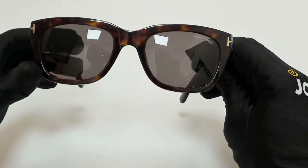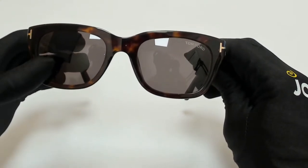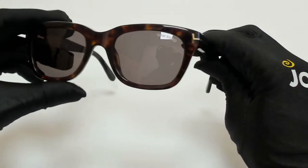The color of the frame is dark Havana and gold, and the lenses are a green flash. They have a square shape.